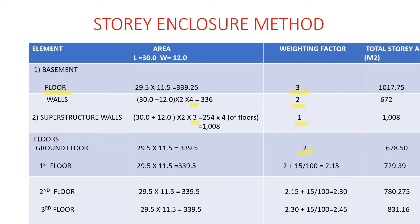For the first floor, we still use 29.5 × 11.5 = 339.5 square meters. The weighting factor is 2 + 15% = 2.15. So 2.15 × 339.5 = 729.39. For the second floor, the weighting factor becomes 2.15 + 15% = 2.30 (approximately 3.0 as rounded). So 2.30 × 339.5 = 780.75.